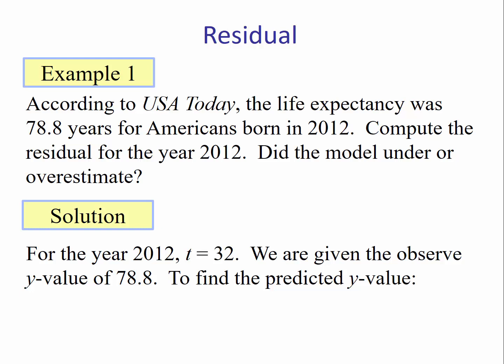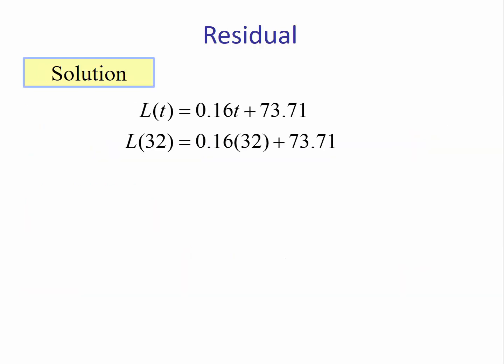To find the predicted y-value, we use the regression equation. We substitute 32 in for t and we get 78.83. That is the predicted y-value when t is 32. So the residual would be the observed 78.8 minus the predicted 78.83, and we get negative 0.03.